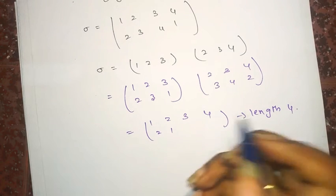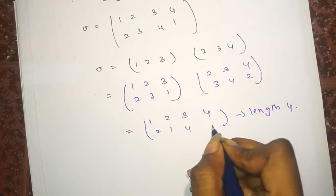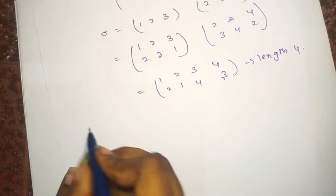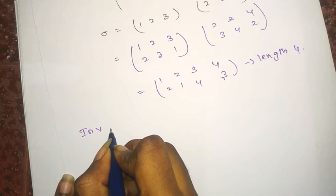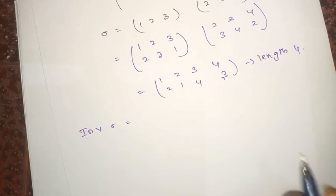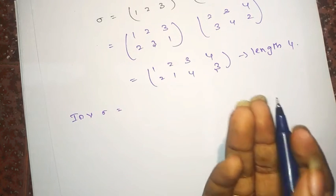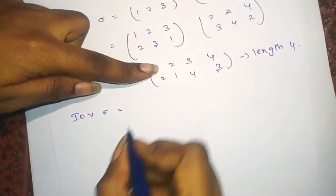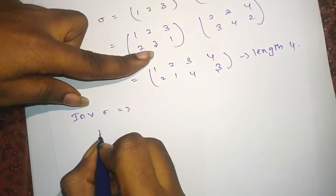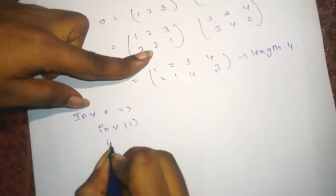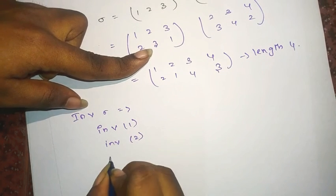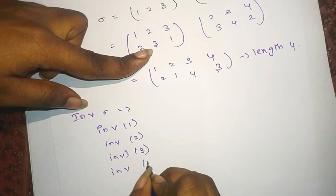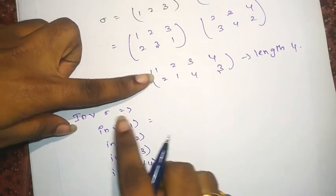The result is (2 3 4 1). My previous lecture is on inversion of Sigma, and its link is also provided in the description box. So I'll first write: inversion of 1, inversion of 2, inversion of 3, inversion of 4. I'll also explain this inversion once again.